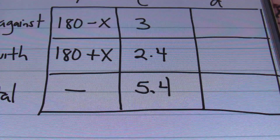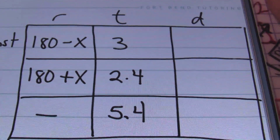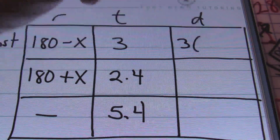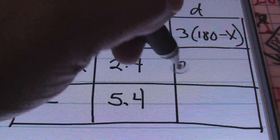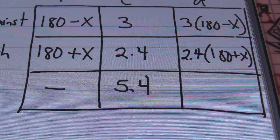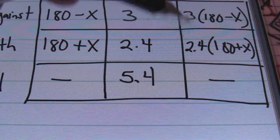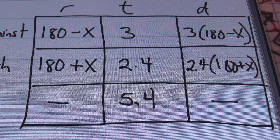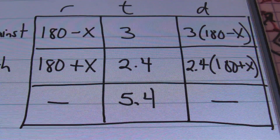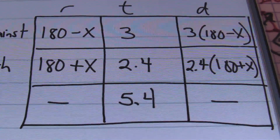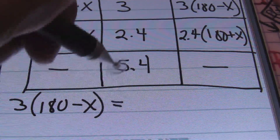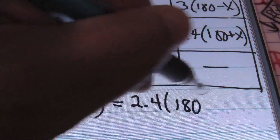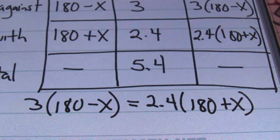The distance is always the first column times the second column. So against the wind: 3 times (180 minus X). With the wind: 2.4 times (180 plus X). Since the plane traveled the same distance going and coming back, we simply set the distances equal to one another. So my equation will be: 3 times (180 minus X) equals 2.4 times (180 plus X).